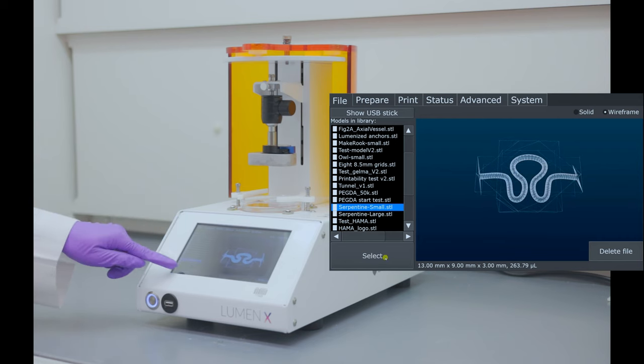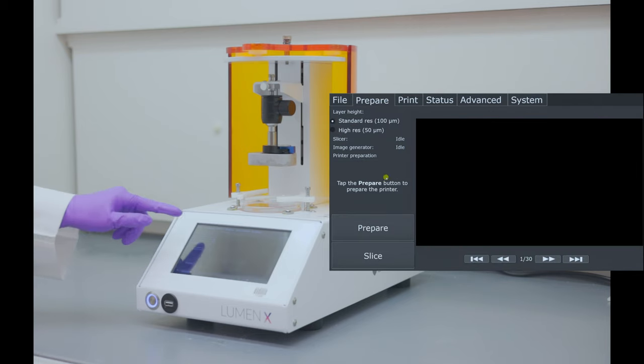After confirming the file, tap continue. Next, we go to the prepare menu. Here, we can choose a resolution between 100 or 50 microns, which determines the Z resolution. Now, we can tap on slice.